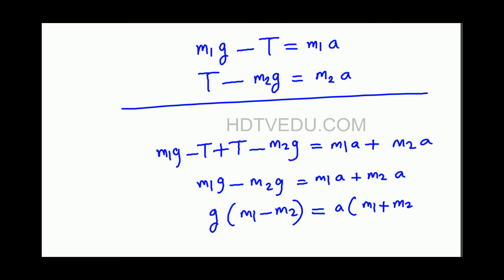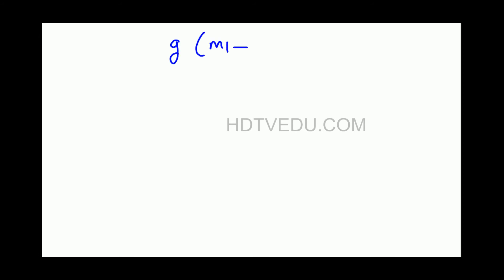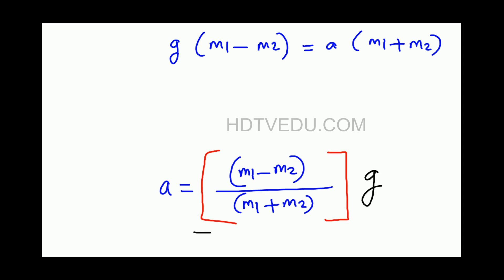Let's go to the next page. G times M1 minus M2, equals A times M1 plus M2. And that is your acceleration, that is the expression for acceleration.